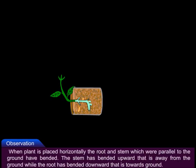When the plant is placed horizontally, the root and stem which were parallel to the ground have bent. The stem has bent upwards, that is away from the ground, while the root has bent downwards, that is towards the ground.